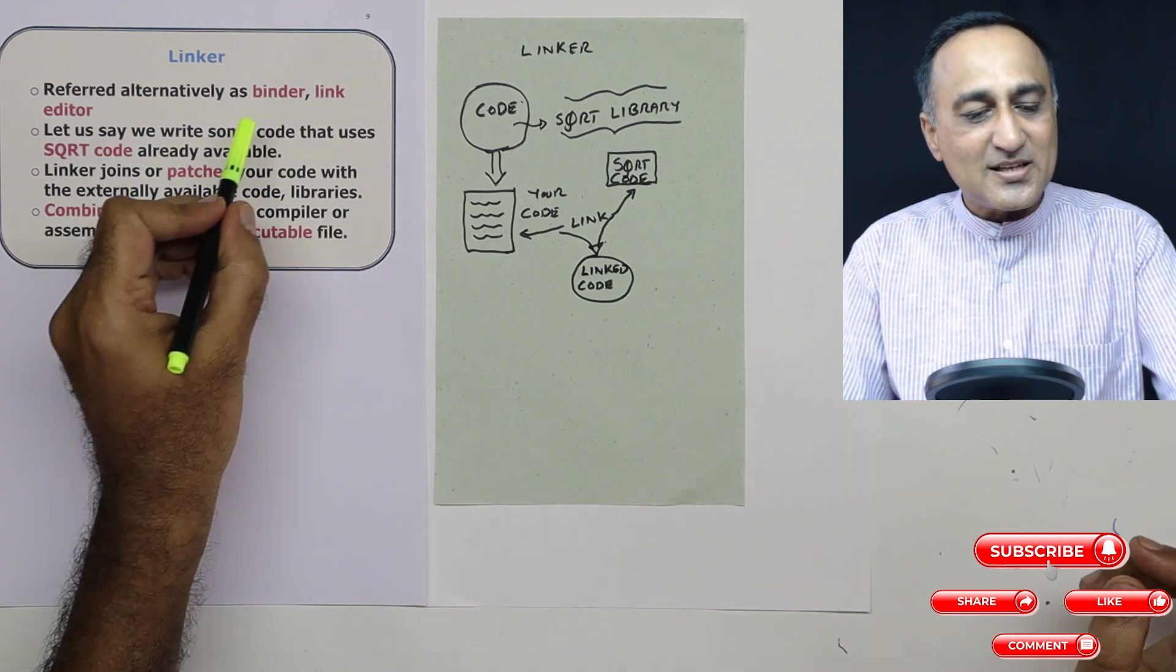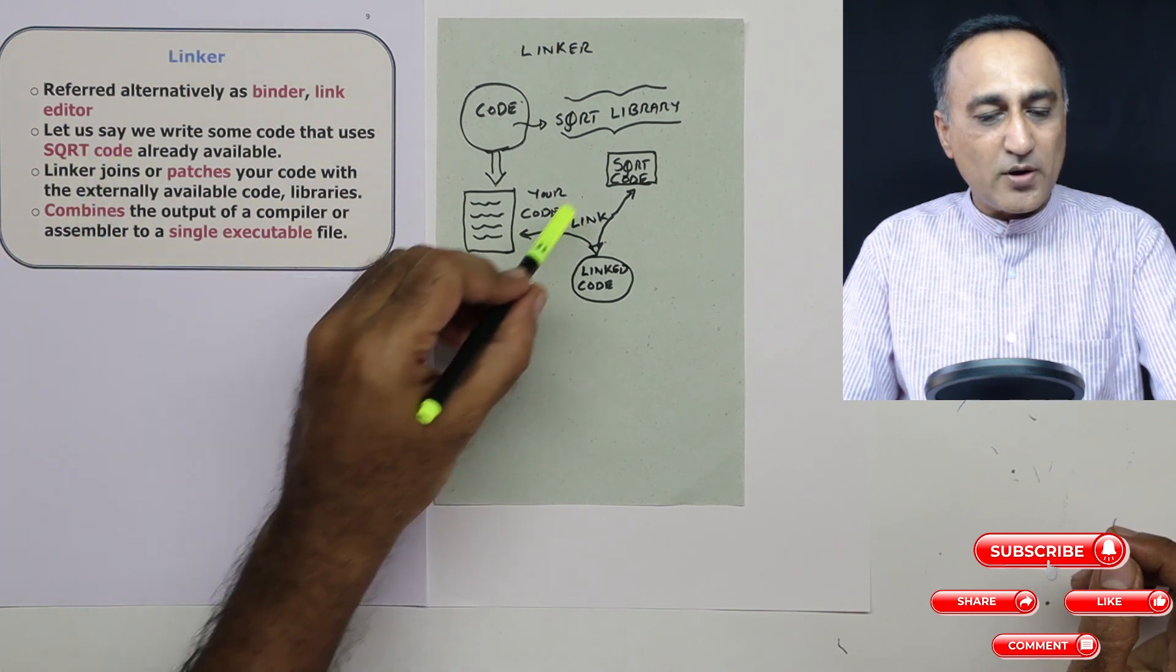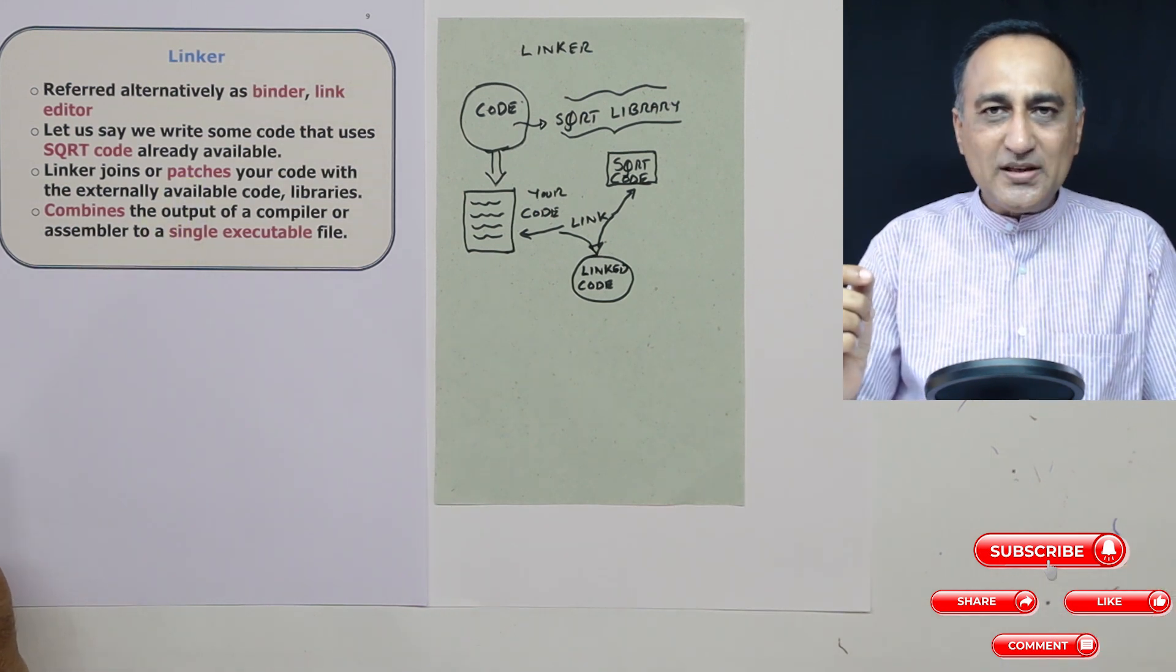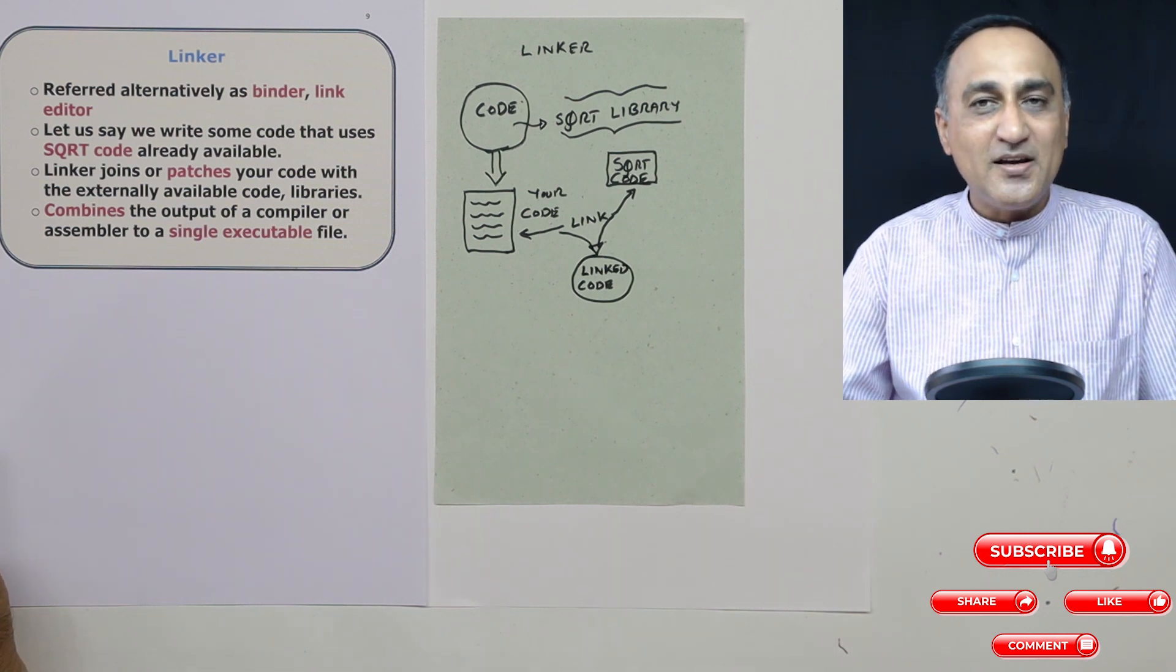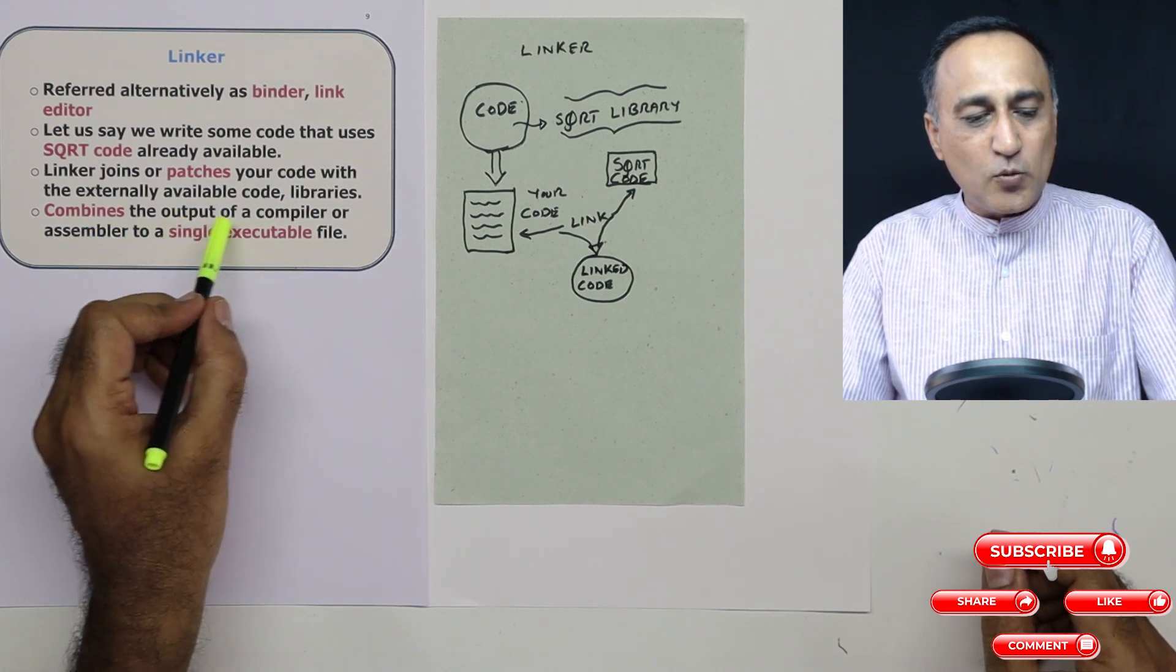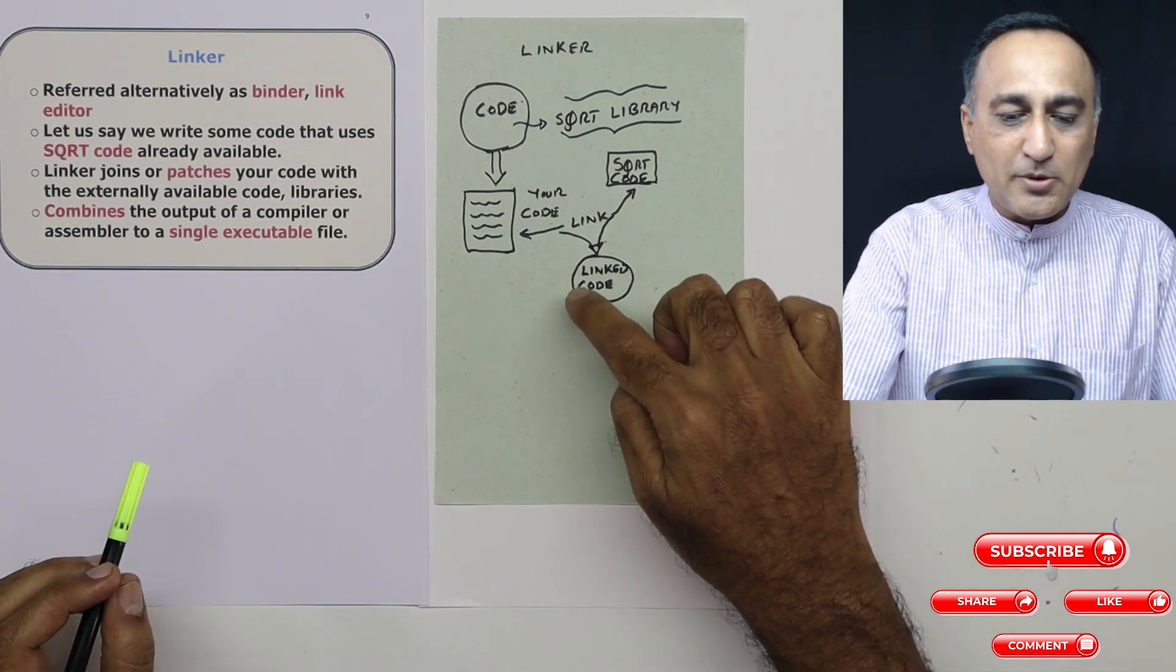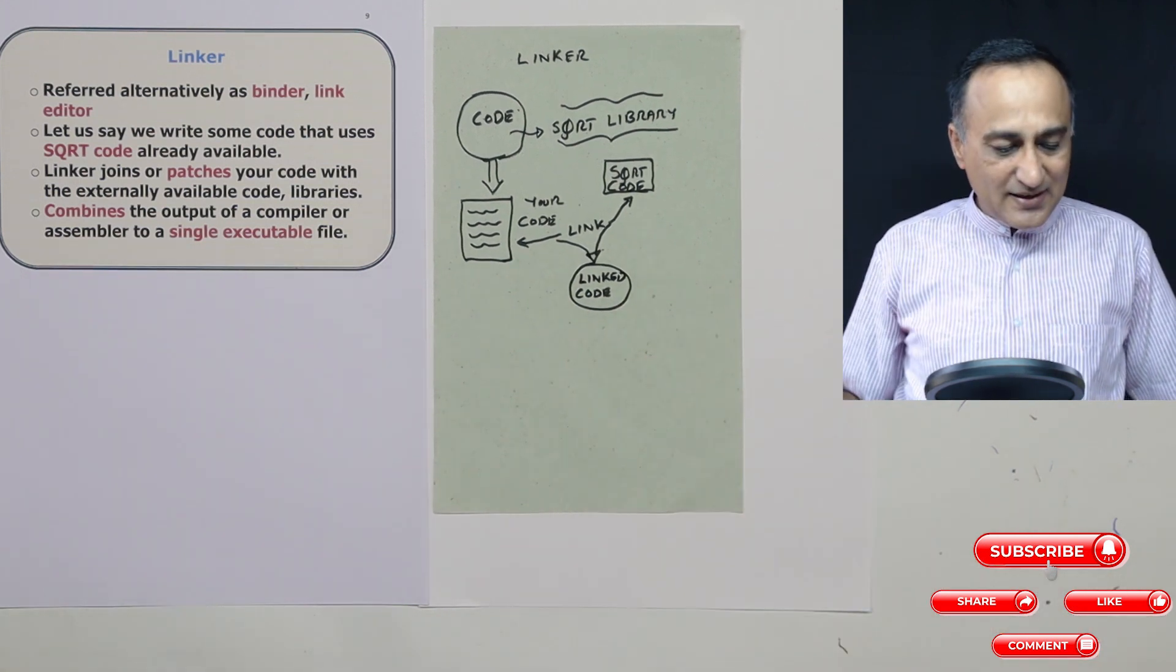That's why the linker is referred to as the binder or the link editor. I've already given an example of square root and how it is done. So linker basically joins or patches your code with code written in libraries or code written by some of your friend who is working on the same project. So the advantage is it combines the output of the compiler or the assembler into a single joint code so that you're able to run it on the machine. So I hope this gives you a clear idea of what a linker does.